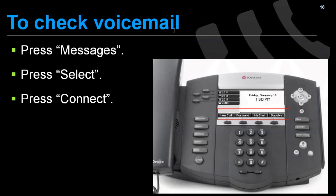To check voicemail, most of the phones have a messages button. Simply press messages, a menu comes up, press select, and then hit connect. The messages button is on the right-hand side and is also a function soft key. You may need to press the more soft key first to see messages. Once you find that button and hit messages, select, and connect, it's going to tell you how many messages you have and then start to go through those messages.